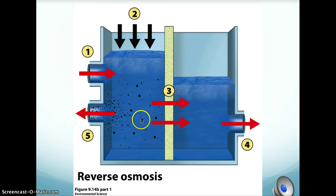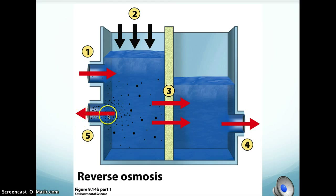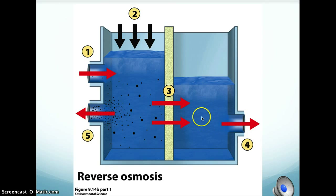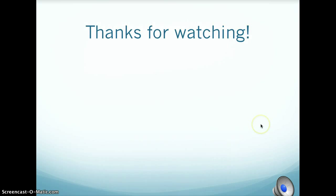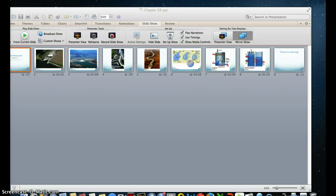So the salt stays behind, leaving a more concentrated salt water — brine — on the left side, which exits and is returned to the ocean. On the right side, you're left with nothing but fresh water, which exits as usable water. That's how humans alter the availability of water. Be sure to ask questions in class.